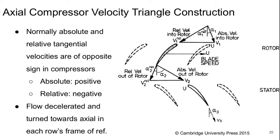Normally, the absolute and the relative tangential velocities are of opposite signs in compressors. So the absolute tangential velocities will be positive, and the relative tangential velocities will be negative. You see that here, both in and out of the rotor.